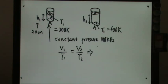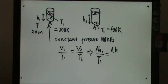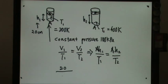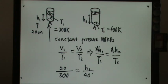V1 is basically AH1, and T1 is here, then we have AH2 and T2. So we can cancel out A. What happens here is that H1 is 20 — that's given — and T1 is 300 Kelvin, already in Kelvin so you don't have to add any number. H2 is unknown, and the new temperature is 400.